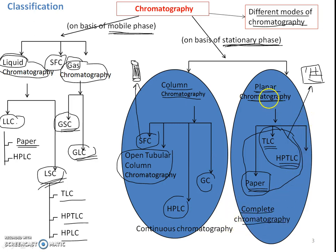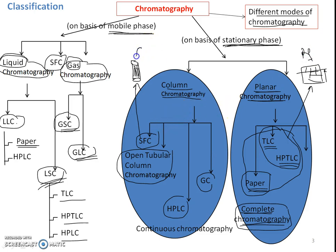One more terminology is complete chromatography. In planar chromatography, after applying the spots, we allow the mobile phase to run up to a particular distance — typically 75 to 80% of the plate height — and then stop the running of the mobile phase and remove the plates. This is called complete chromatography. Paper, TLC, and HPTLC are examples of complete chromatography, where evaluation is based on the Rf value of the compound. Whereas in column chromatography, the mobile phase continuously passes through the stationary phase and is detected by a detector — this is called continuous chromatography.